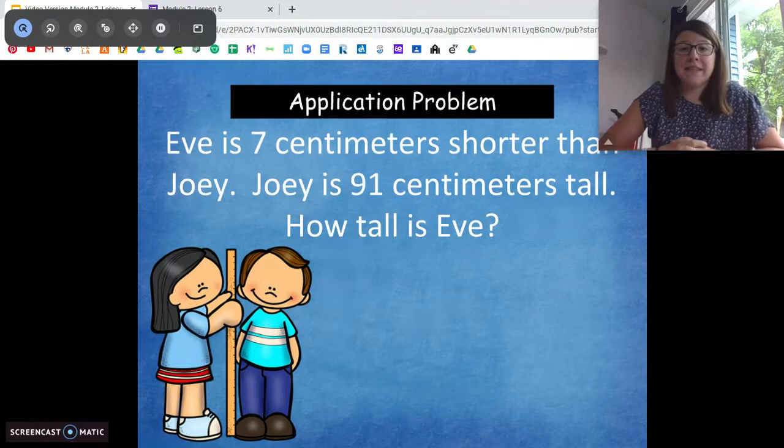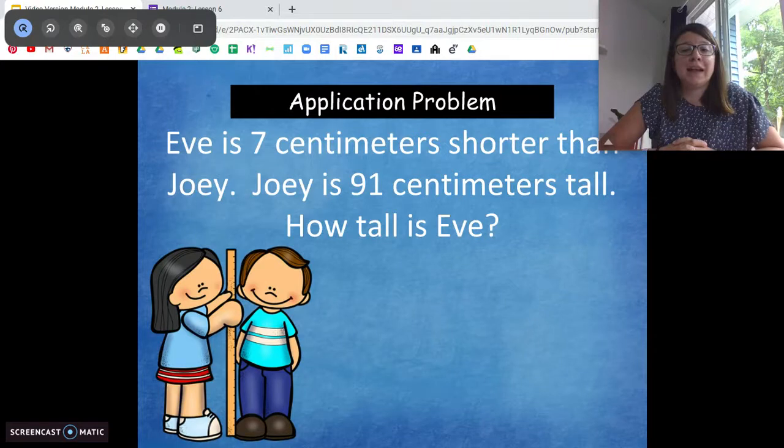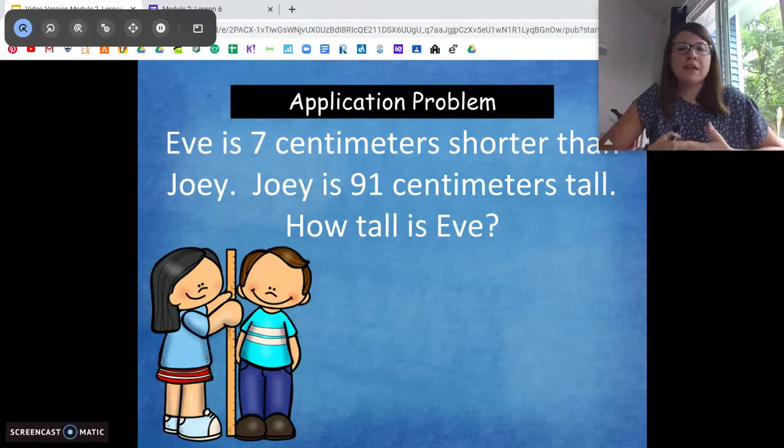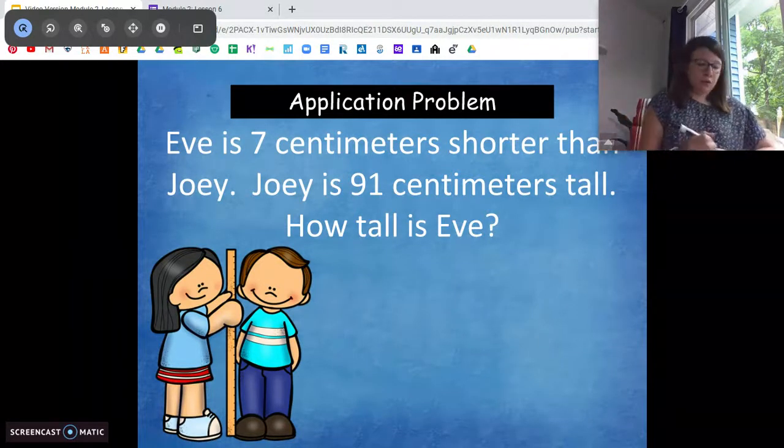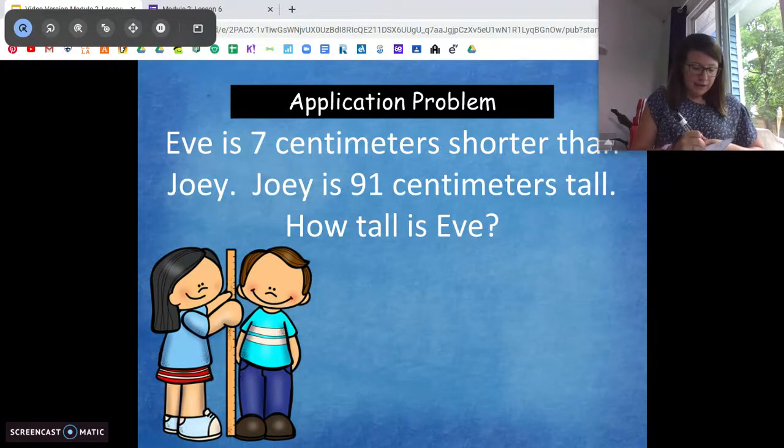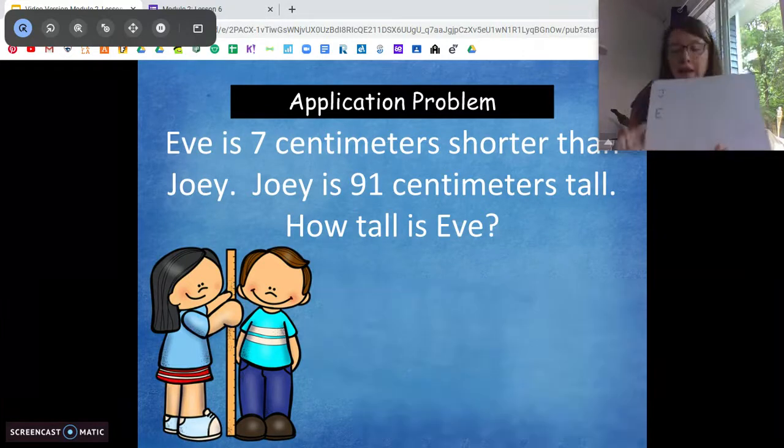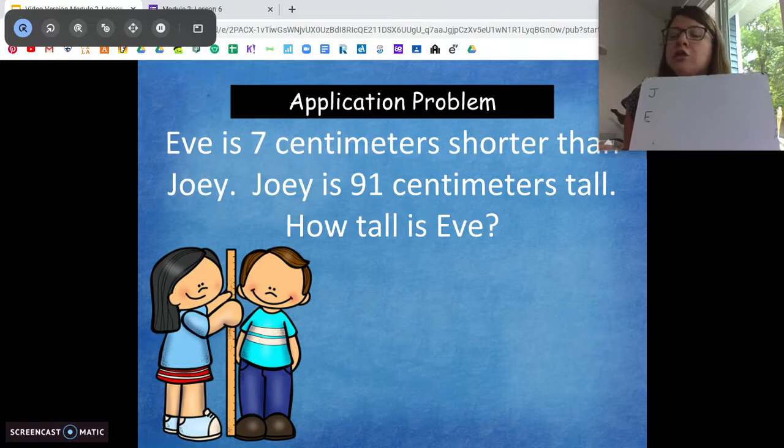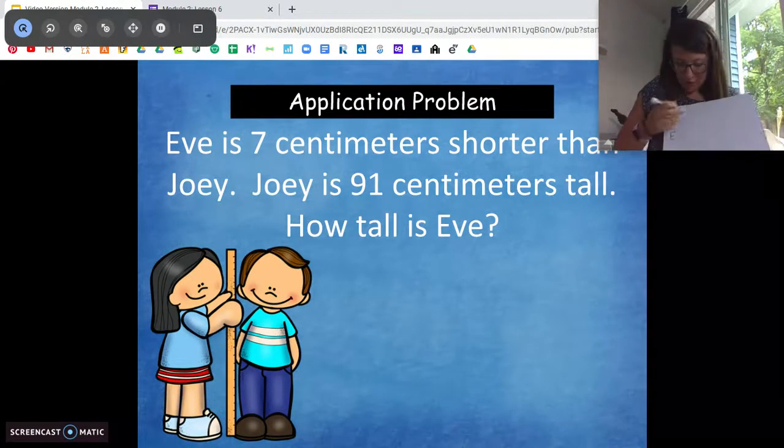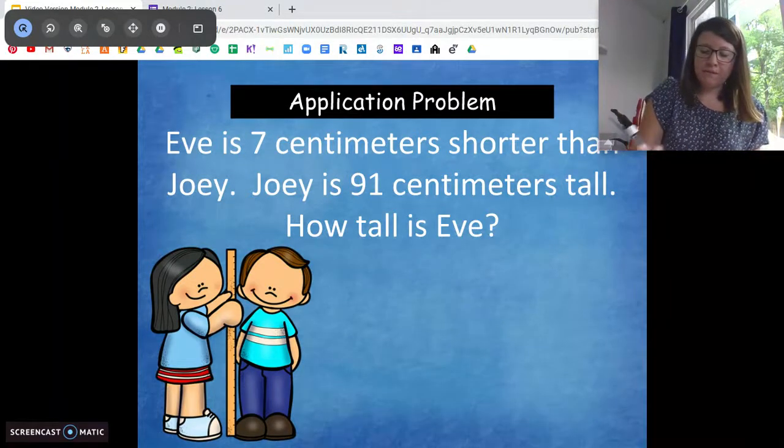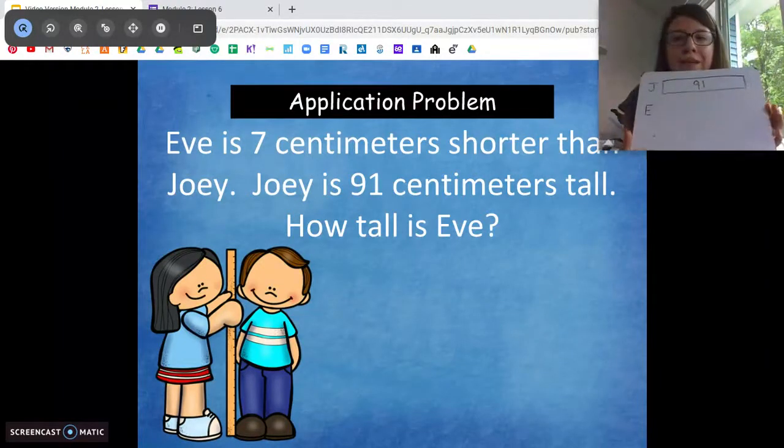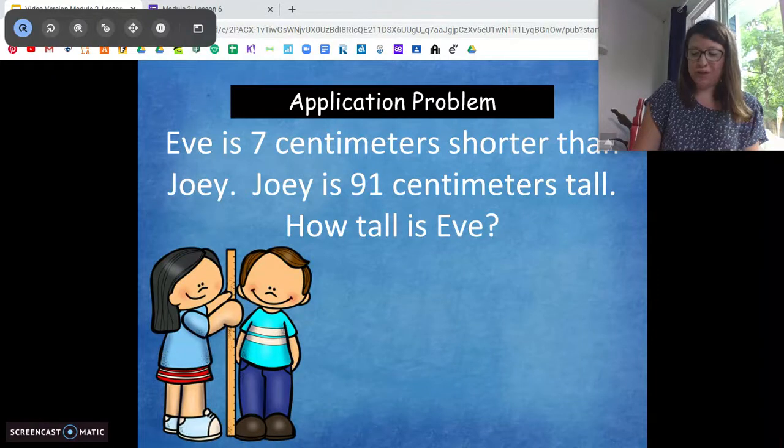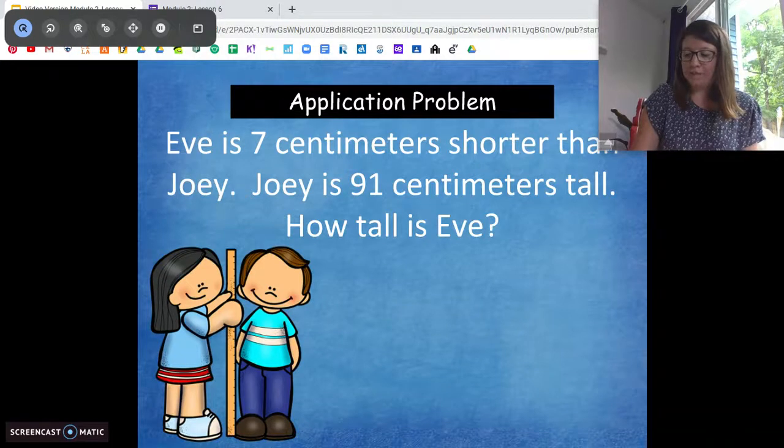So this says Eve is 7 centimeters shorter than Joey. Joey is 91 centimeters tall. How tall is Eve? The first thing I want us to do to solve this problem is to draw a tape diagram picture and I'm going to show you what I mean with that. So we need to figure out Eve's height, right? The question is asking how tall is Eve? So I have a J for Joey and an E for Eve. Now we don't know how tall Eve is, right? We just know she's 7 centimeters shorter than Joey. Joey is 91 centimeters tall. So what I'm going to do is I'm going to draw a rectangle and write the number 91 in it. So I know Joey is 91 centimeters tall. Now Eve is 7 centimeters shorter than Joey. So her box is going to be shorter than Joey's. Not a ton shorter, but shorter. And this distance right here is going to be 7.